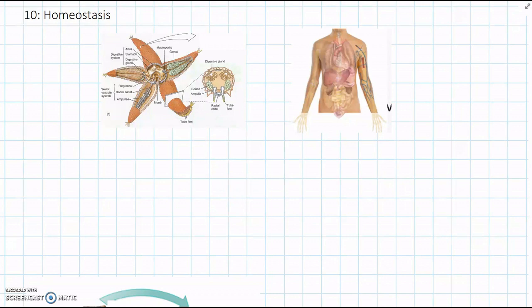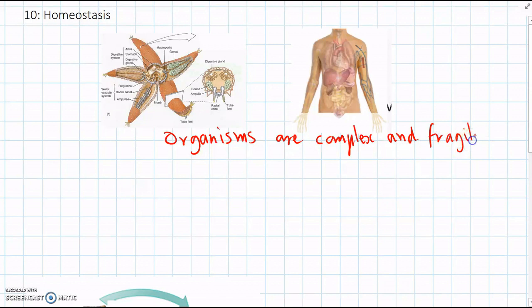Looking at these diagrams, look how complicated the internal environment of animals is. We've learned that there are lots of organs and systems all working together. So organisms are very complex. And all these organs need a certain set of conditions to function properly. So organisms are complex and they're fragile as well. They need things to be just right.